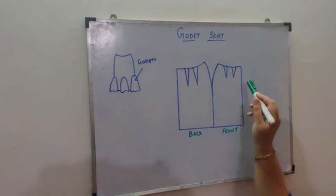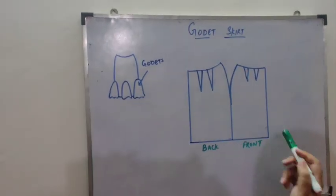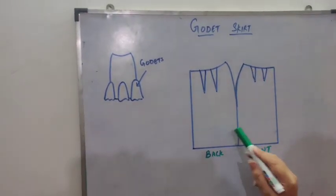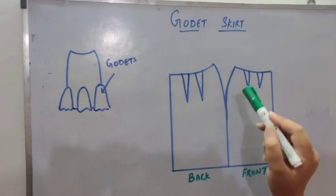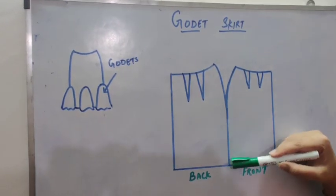Here you can see I have already made a diagram of a basic skirt, a two-dart skirt. This is back and this is front. You have to trace both these skirts together joining the side seam.